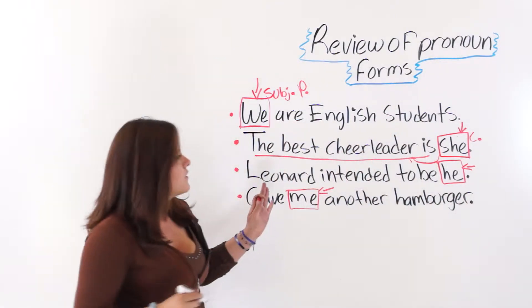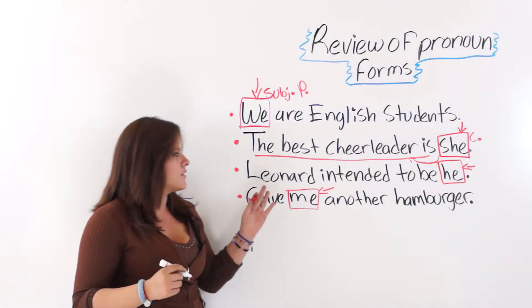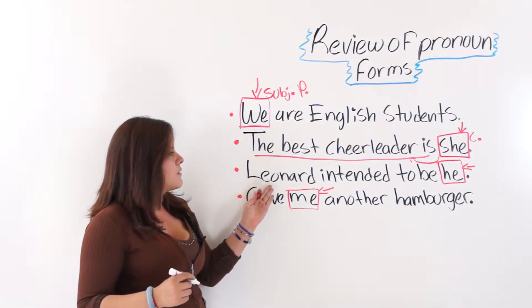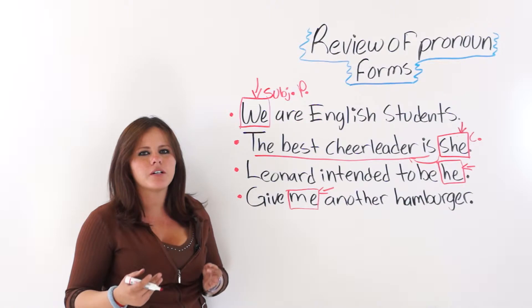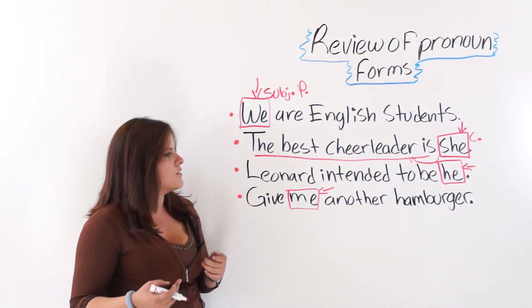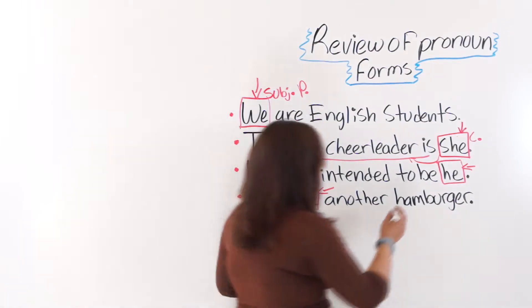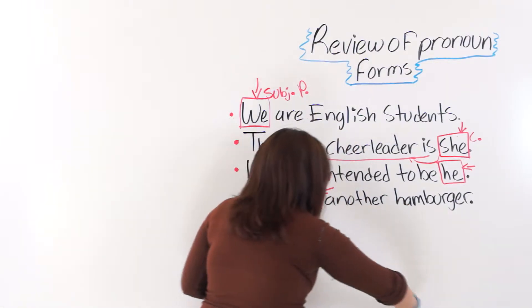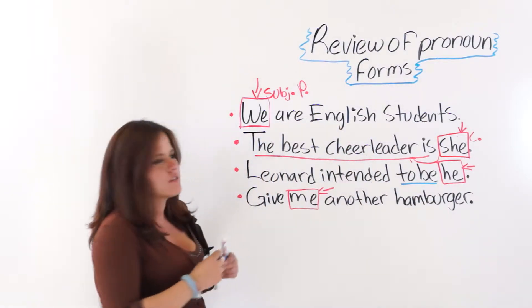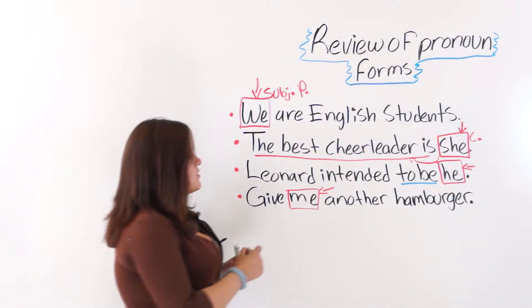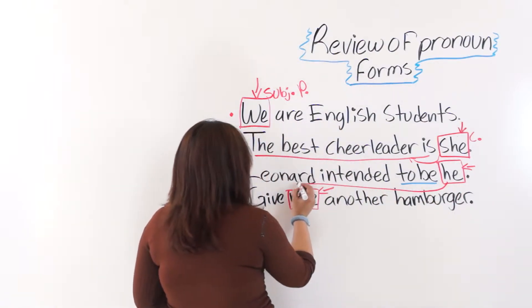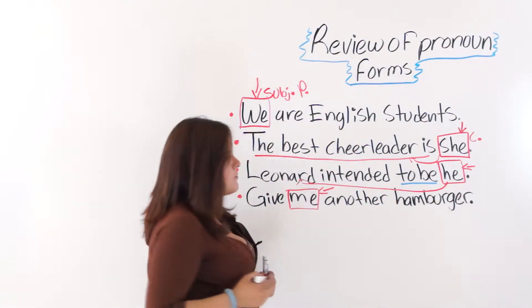The next one says, Leonard intended to be he. In this sentence or statement, we are looking at a very different structure. Leonard intended to be he. We have the verb, the infinitive be, to be, without a subject. So this is simply a complement of our object, he.